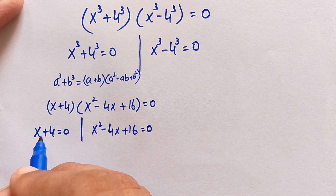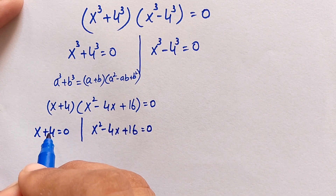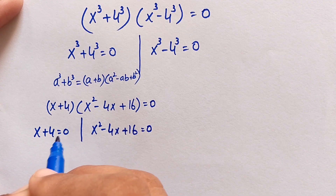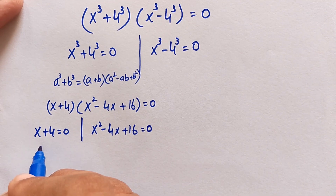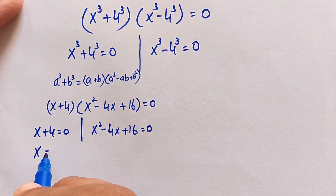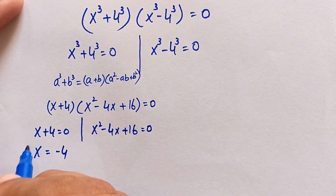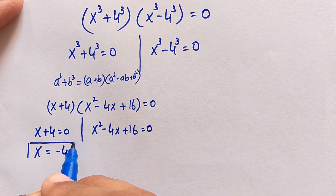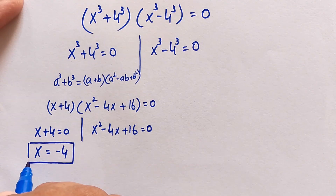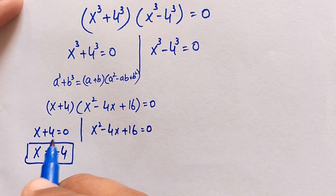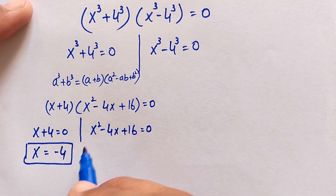From x plus 4 equals 0, we move 4 to the right side, giving x equals minus 4. This is the first real solution.